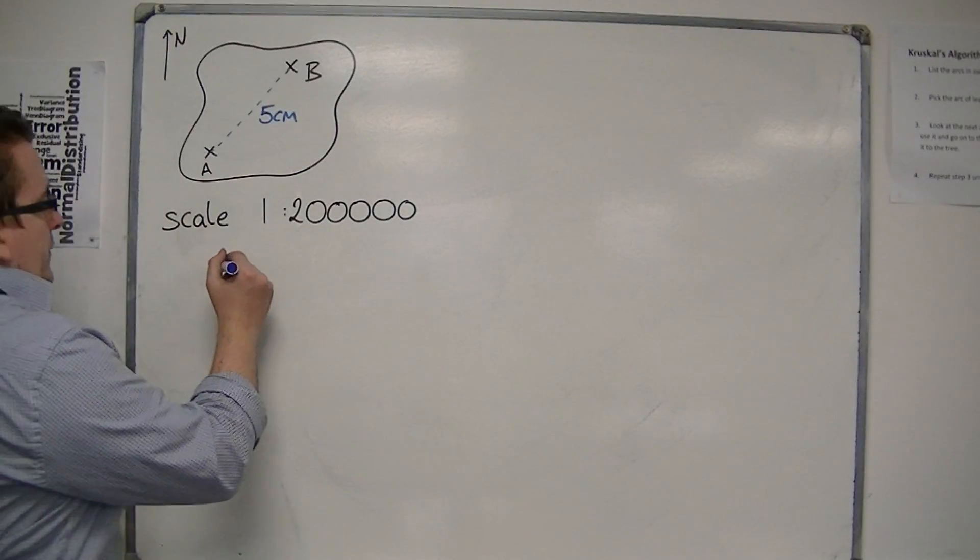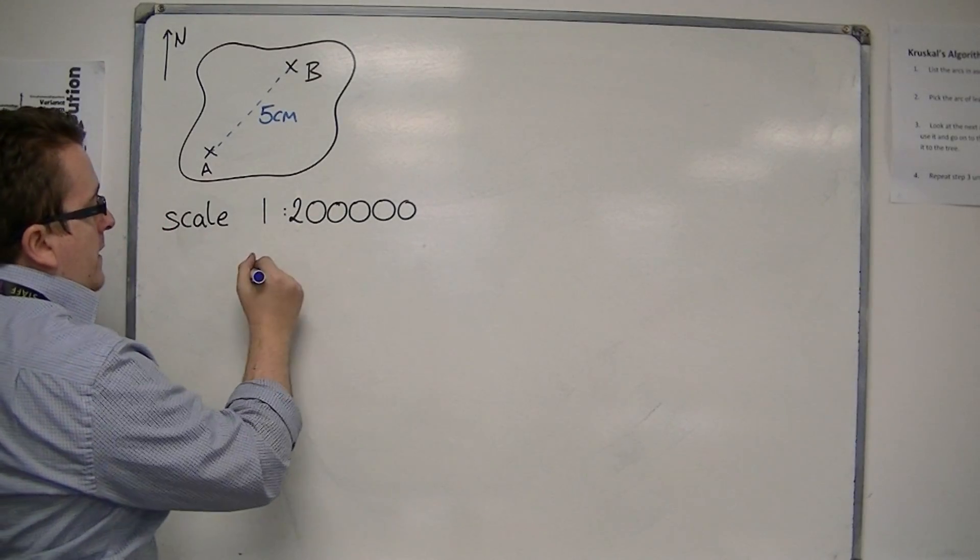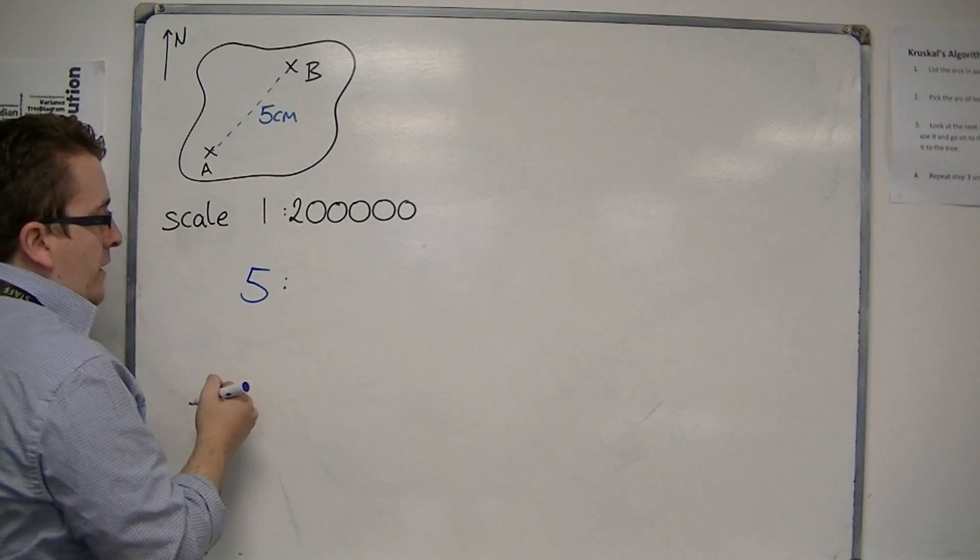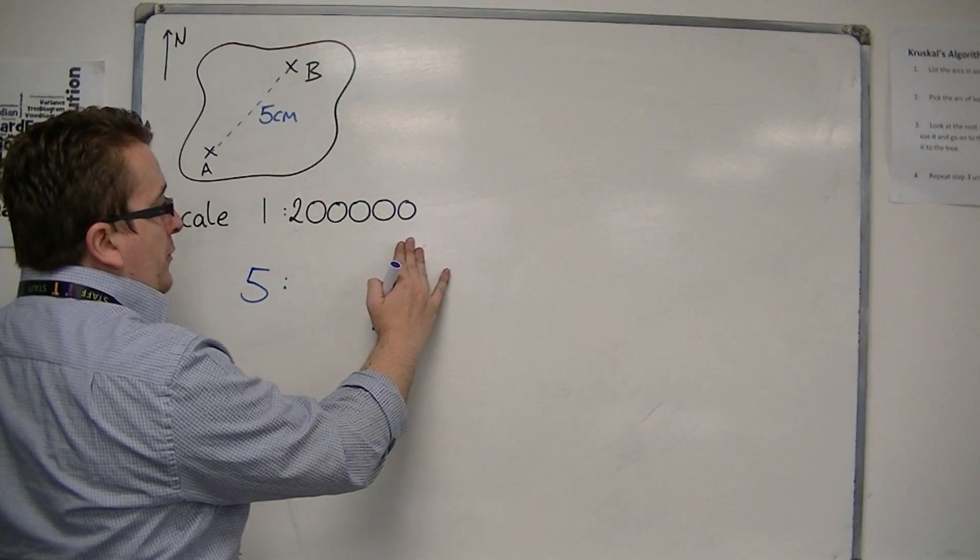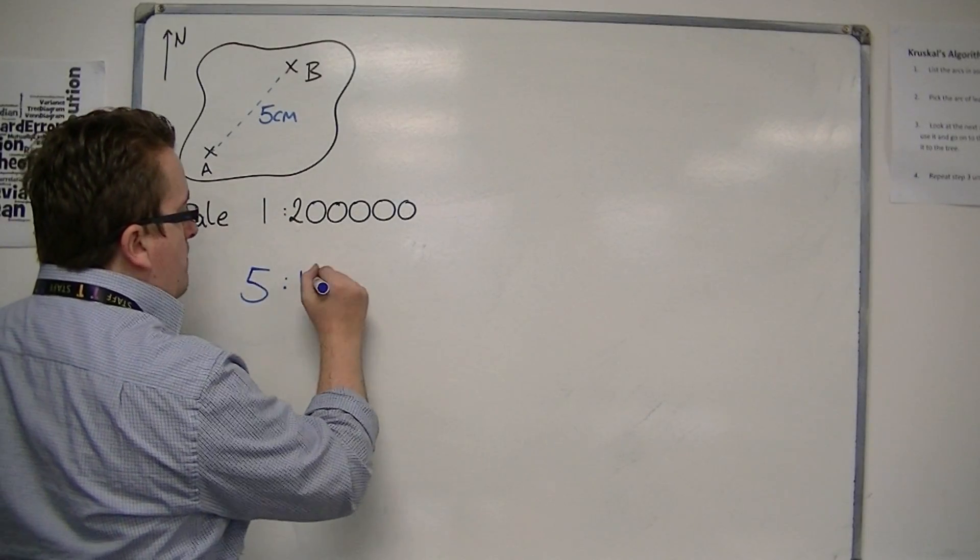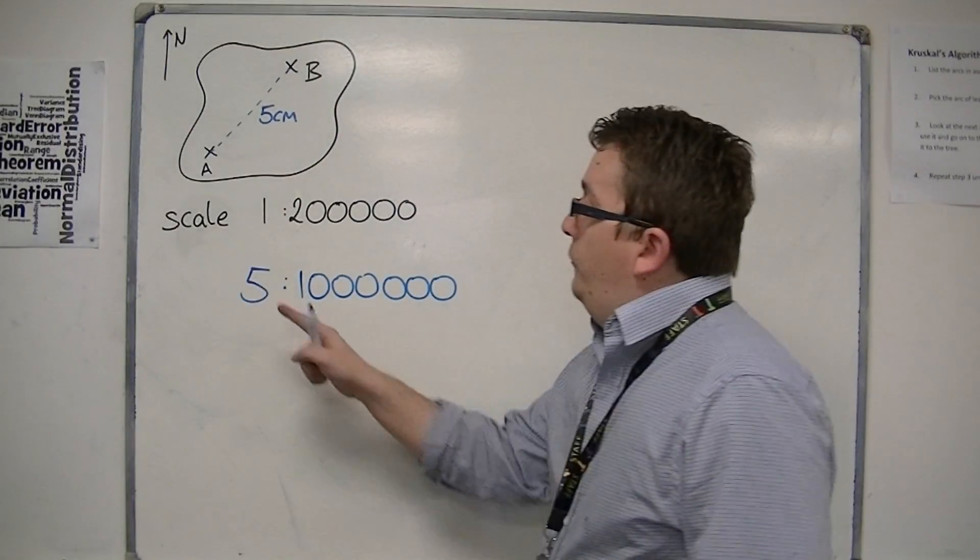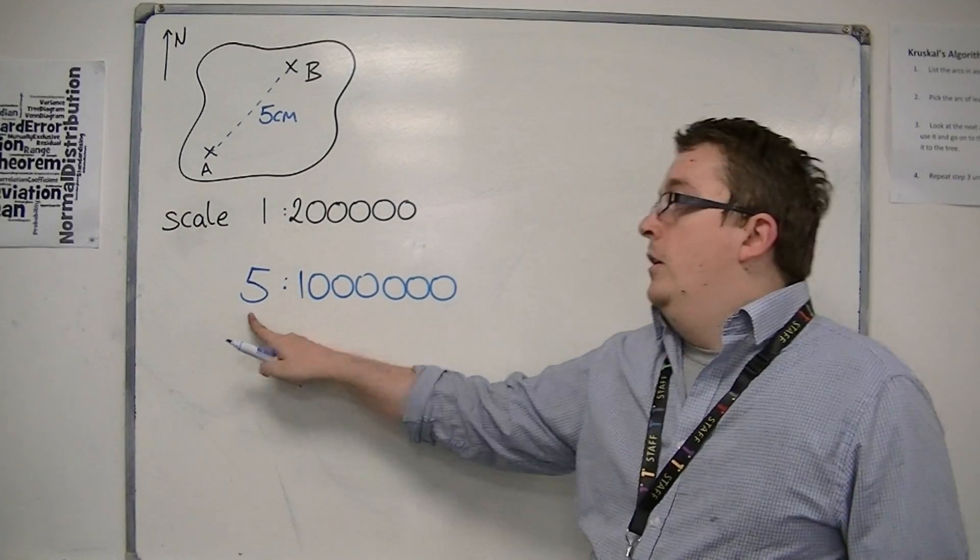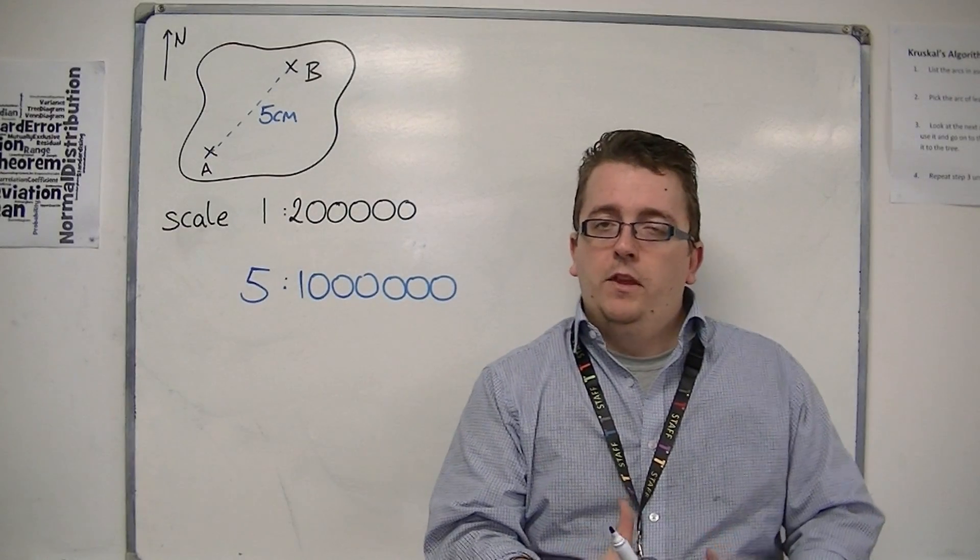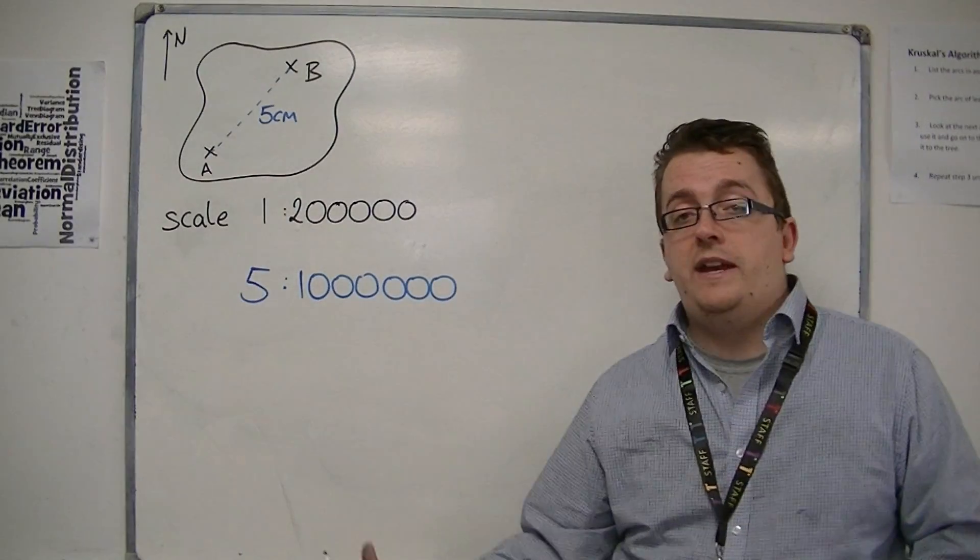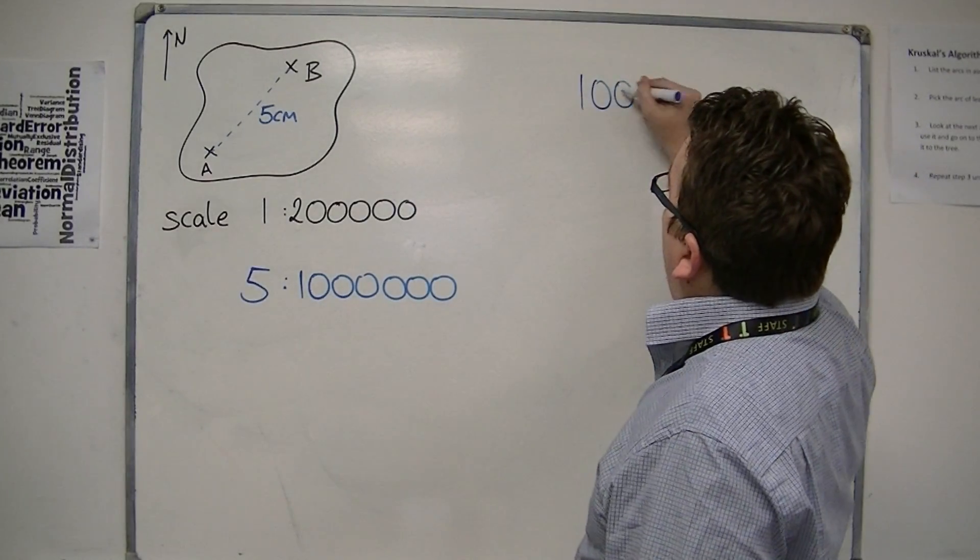So that would mean that my five centimetres, if one to two hundred thousand is like that, then if I multiply the one by five to make five, then I'm going to multiply the two hundred thousand by five as well. Now two hundred thousand multiplied by five is one million. So in other words, five centimetres on the map relates to a million centimetres in reality, from town A to town B.